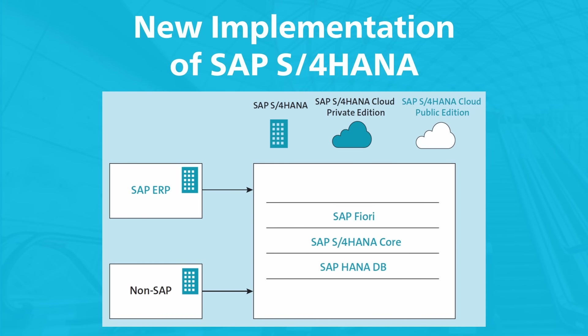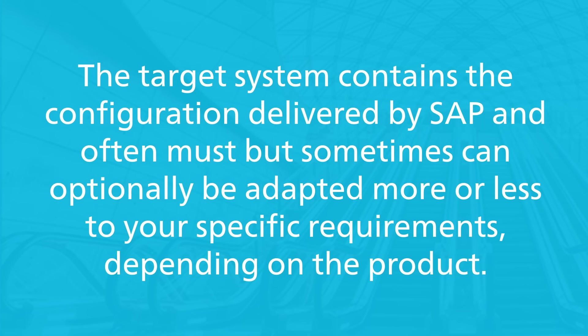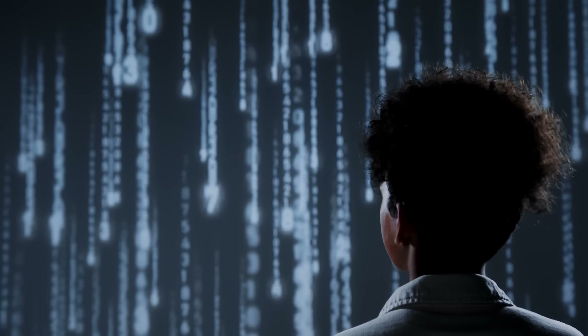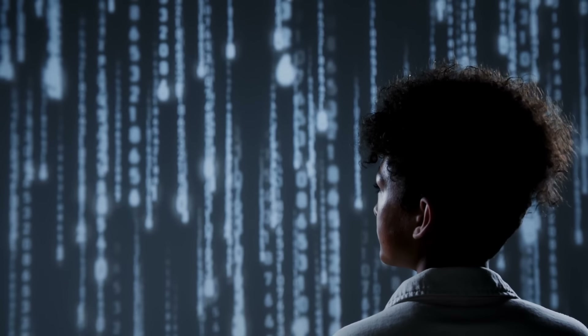This figure shows a schematic representation of the greenfield strategy for a new implementation of an SAP S4 HANA system. In this case, the data from an SAP ERP system or a non-SAP system is migrated to an SAP S4 HANA product. The target system contains the configuration delivered by SAP and often must, but sometimes can optionally be adapted more or less to your specific requirements, depending on the product. Data is then loaded into the target system using the defined data migration tools.